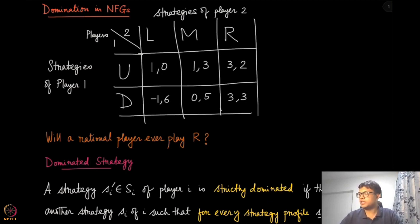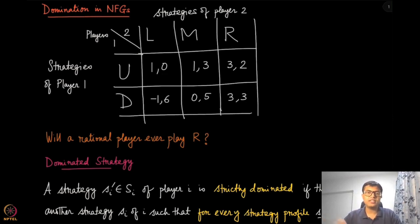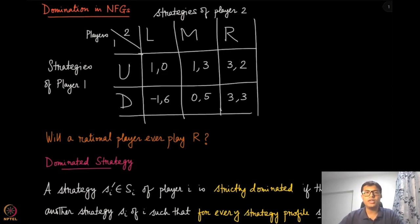Let us look at this game matrix with Player 1 and Player 2. Player 1 has two strategies U and D, and Player 2 has three strategies L, M, and R. The numbers represent their payoffs or utilities. Let us look at these numbers more carefully and try to argue whether a rational player, who always tries to maximize utility, will ever play strategy R. Suppose you are Player 2 and considering playing strategy R — would you ever want to do that?